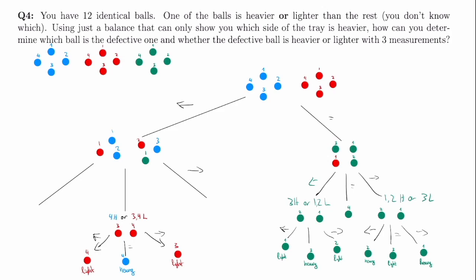In the second scenario — where the left side is heavier in our second weighing — we know that since the blue balls were heavier in the first measurement, either blue three is heavy or red one is light. This is pretty simple: we can just measure red ball one against any non-defective ball, such as green ball one. If the red ball and green ball are equal, then blue three is heavy. If the green ball is heavier than the red ball, then the red ball is light.